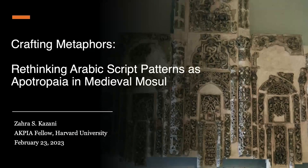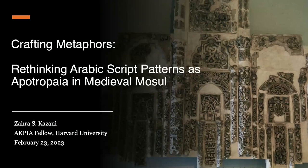Zahra is currently a postdoctoral fellow in the Aga Khan Program for Islamic Architecture at Harvard University. She specializes in medieval Islamic art and architecture with a focus on the Jazira region — the upper areas of Mesopotamia overlying northern Iraq, northeast Syria, and eastern Turkey. She's interested in the social and ritualistic contexts in which objects were perceived and consumed, especially expressions of religious piety, mysticism, and magic.